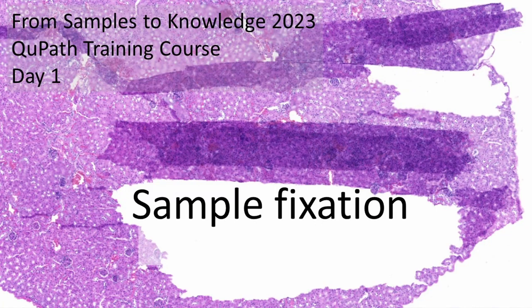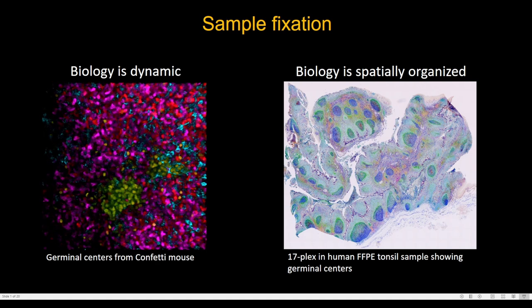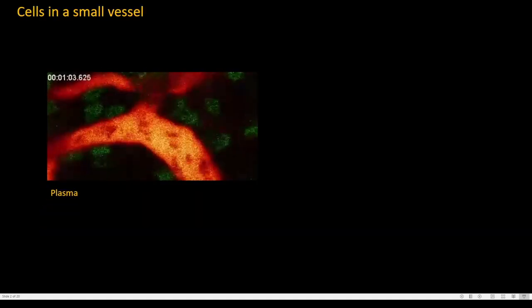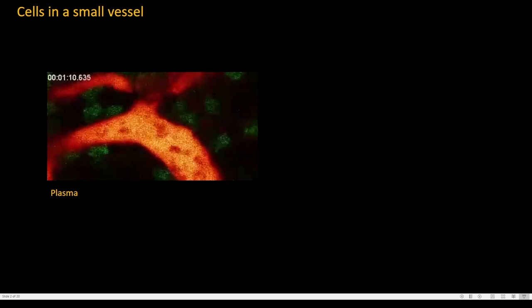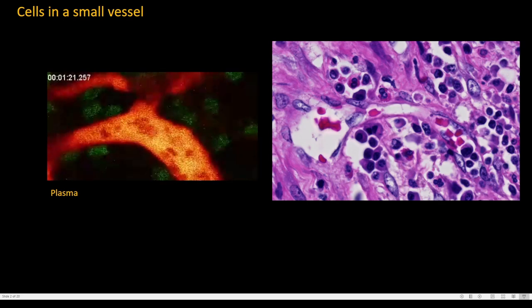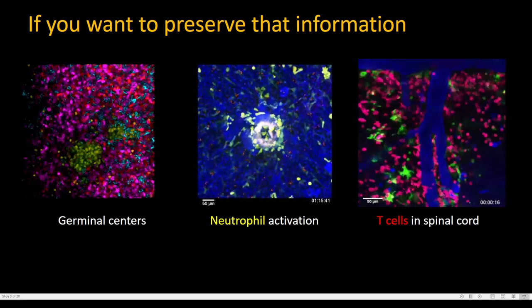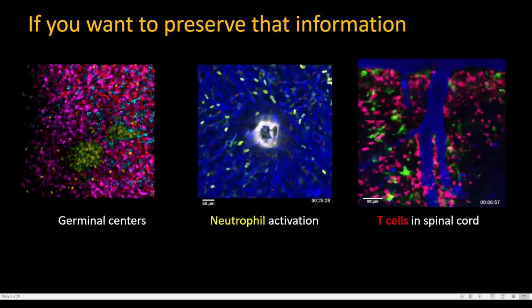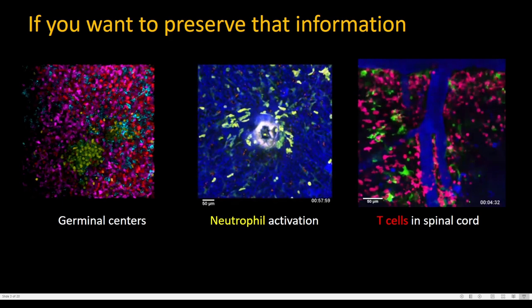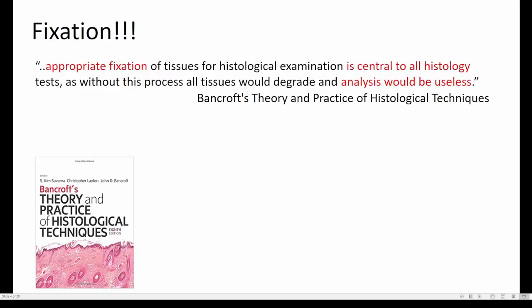Sample fixation is very critical for all downstream histology. Biology is dynamic and it is spatially organized. What we want to see in our samples is a signature of the dynamic processes which were happening inside the living organism. Sometimes when we're lucky we can find it, as in the case of those erythrocytes that were traveling through the blood vessel here. If we want to preserve that information and perhaps even see in our fixed tissue how cells were moving before they were fixed, we have to freeze the time in a certain way — and to do that we use fixation.